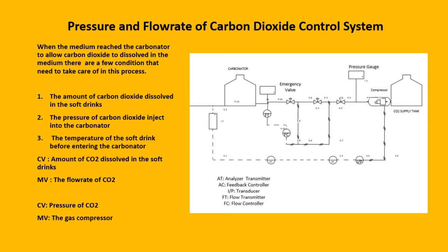The amount of CO2 dissolved in the soft drink and the pressure of CO2 will be the control variables, and the flow rate of the CO2 and the compressed gas will be the manipulated variables. When the amount of CO2 dissolved or the pressure of CO2 drops, the analyzer transmitter and the flow transmitter will send a signal to a comparator, and the comparator will calculate the error between the set point and the signal received. The flow controller and the feedback controller will monitor output and give a correct output to the valve and the compressor. For the pressure, there will be an extra transducer to change the milliampere signal into a pneumatic signal.